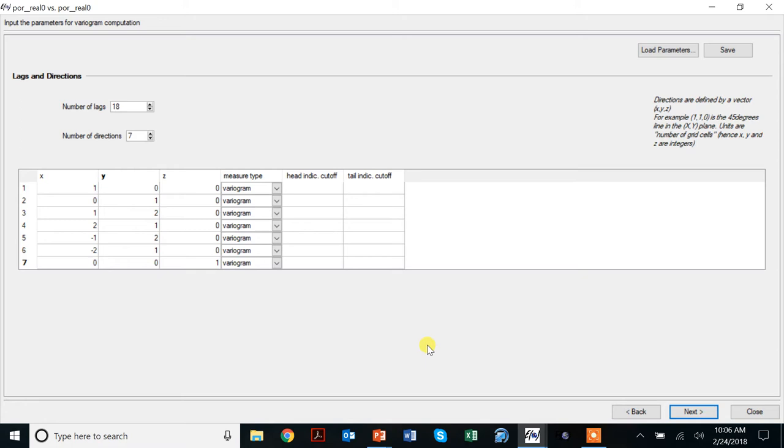Notice I don't calculate any dipping directions, simply because I don't expect anything major new to happen in that dipping direction. The vertical variogram at the bottom is already sufficient.